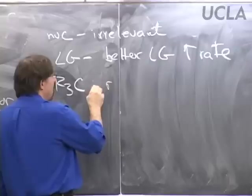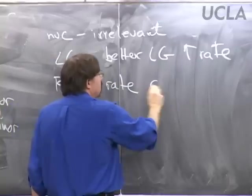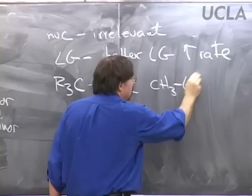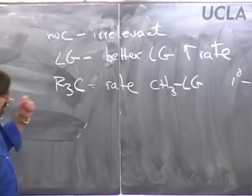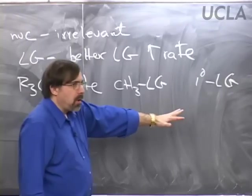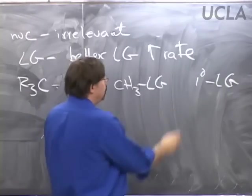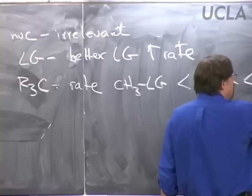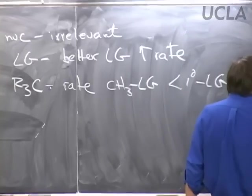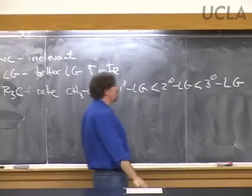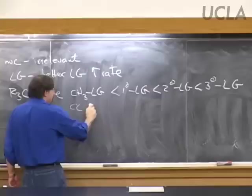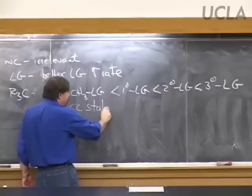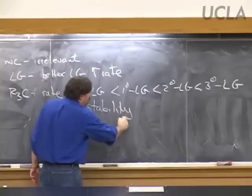In terms of rate: methyl leaving group, primary leaving group — which is faster, methyl or primary in an SN1 reaction? Primary, then secondary being even faster, and tertiary being the fastest of that entire set. This is related not to steric hindrance but rather to carbocation stability. The more stable the carbocation, the easier it is to make.